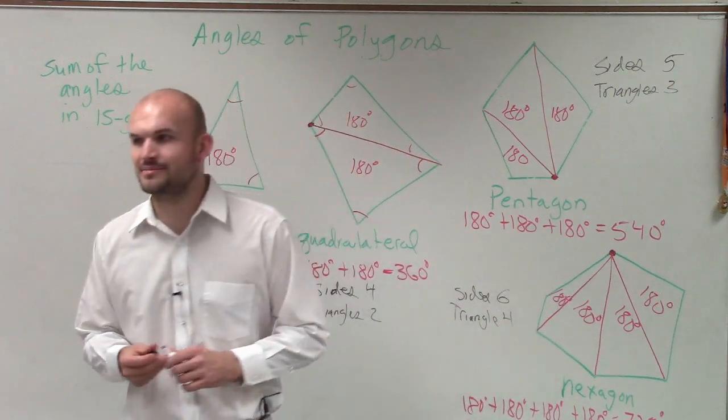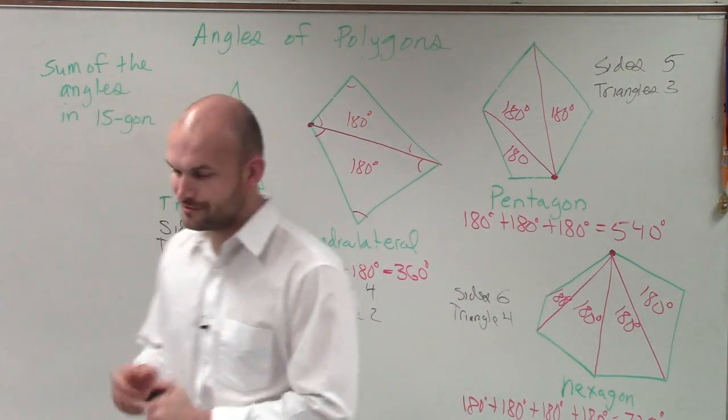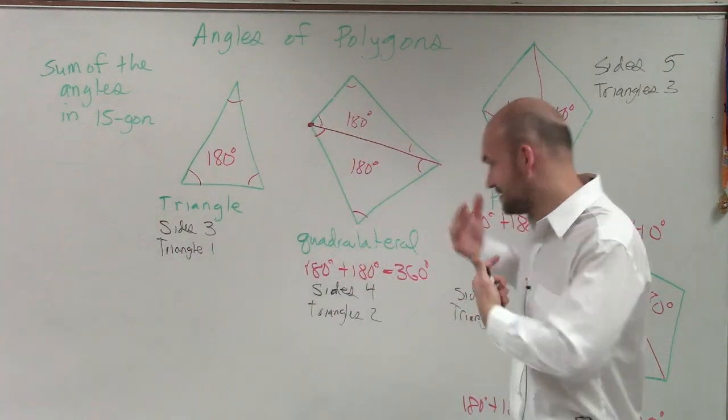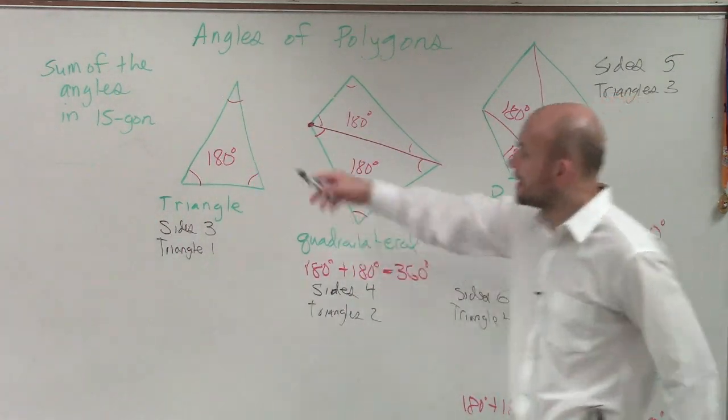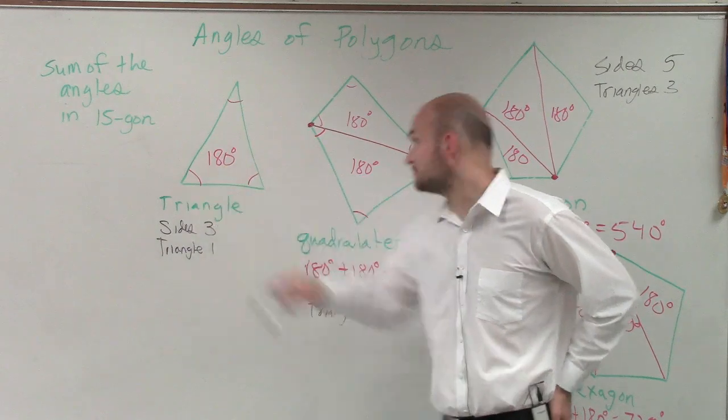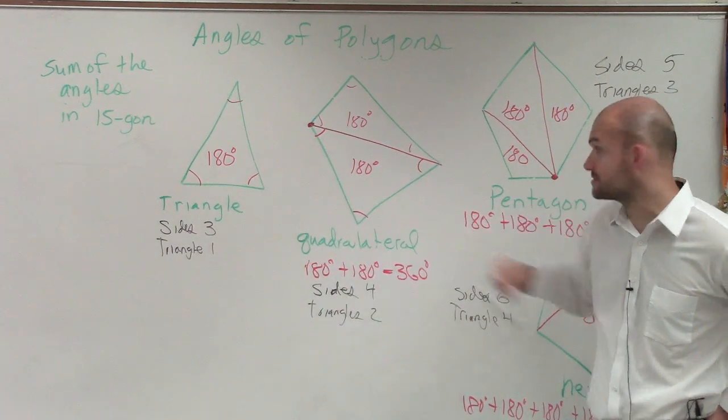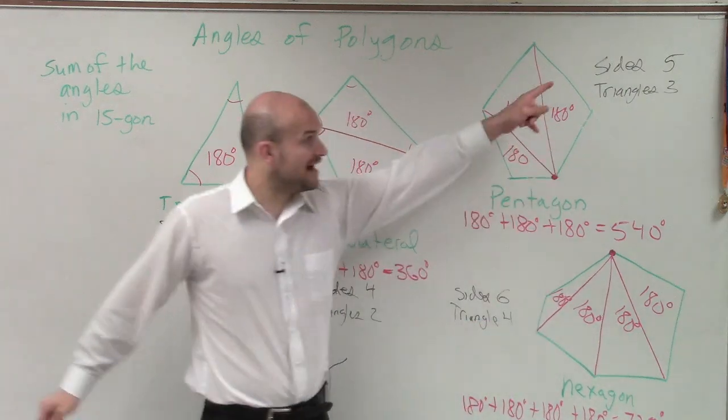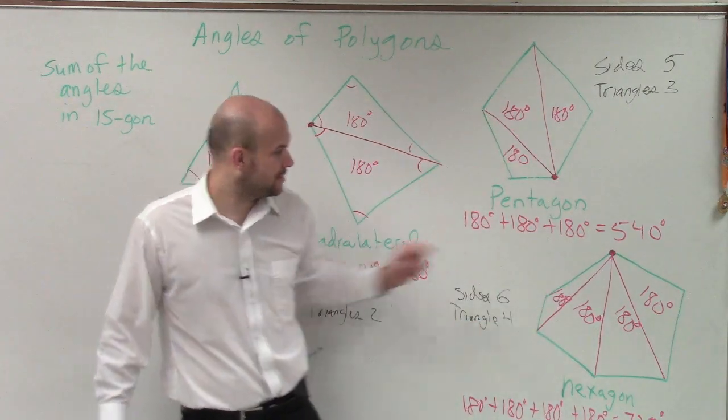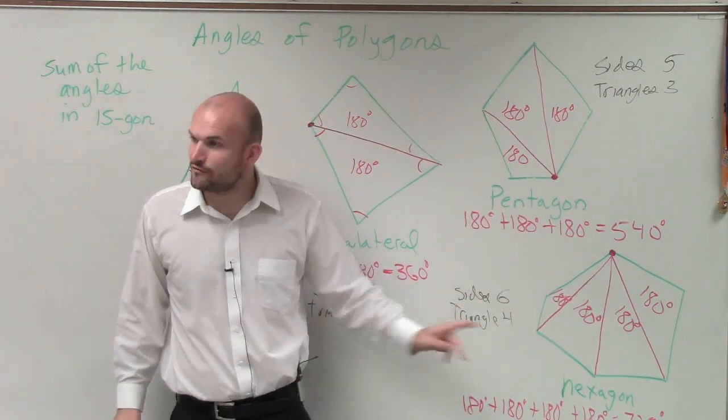Now, who wants to be the money? Mikael, you've been gone a couple times, and I already got sick. OK, Mikael, triangle, three sides, one triangle. Quadrilateral, four sides, two triangles. Pentagon, five sides, three triangles. Hexagon, six sides, four triangles.